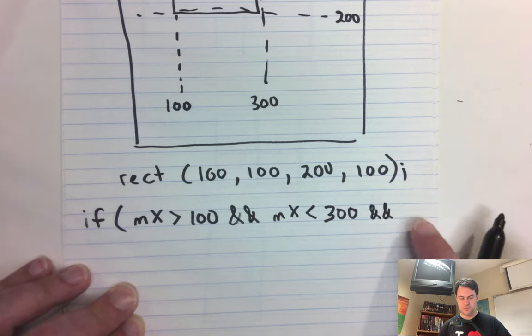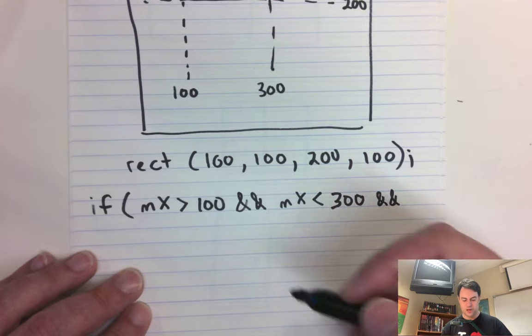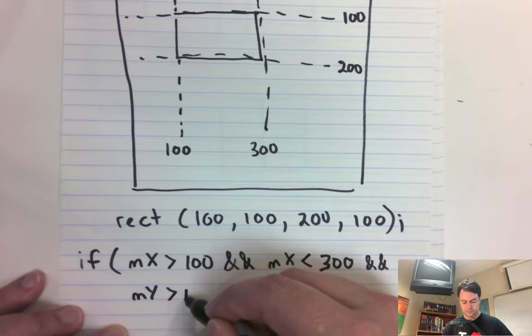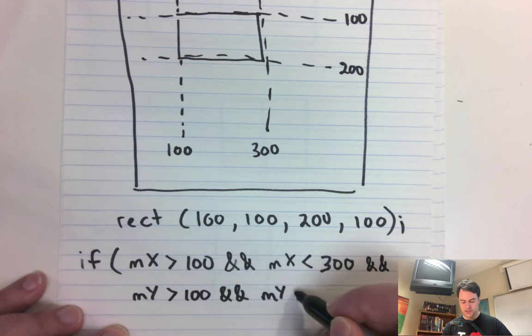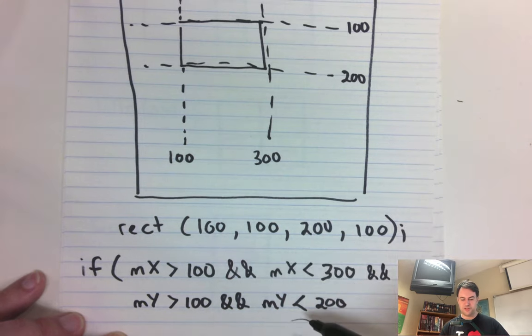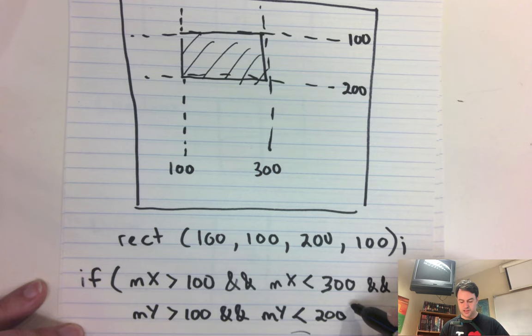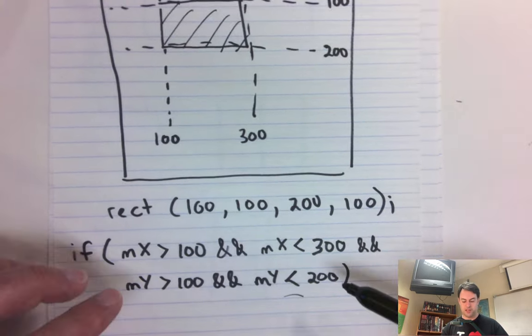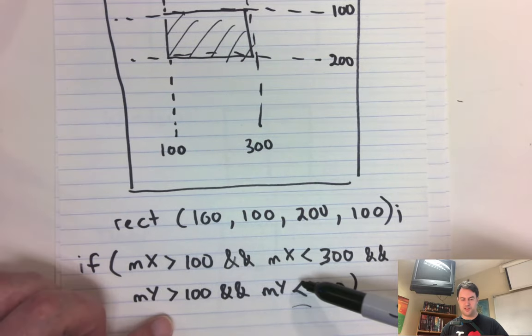And you can do less than or equal to as well. But I'm just going to keep going. I'm going to put my and here. And normally in processing, you would just keep going. But I've run out of room. So I'll just go over to the next slide. Now I'll do the mouse y stuff. So mouse y has to be greater than 100. And mouse y has to be less than 200. So if all four of these things are true, then I know that the mouse is inside of this space here.